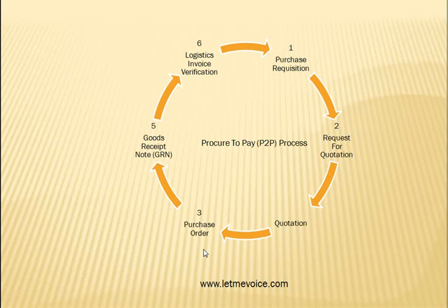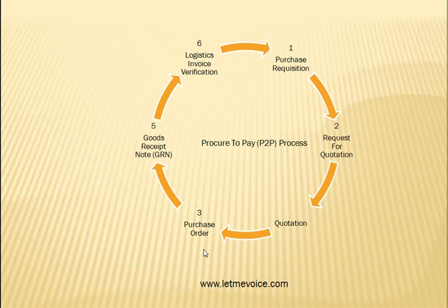There are various purchase order types — SAP provides many PO types and the user gets different screens for each. One type is the Framework Order. If anyone wants to buy a product of very small value, a blanket purchase order has to be raised for a specific maximum value and validity period using document type FO and item category Limit.